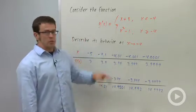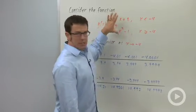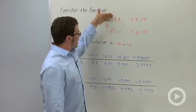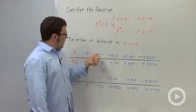Describe its behavior as x approaches negative 4. Well, at negative 4, that's where the two pieces are kind of joined together, and so it may behave differently depending on what side of negative 4 we're on. So let's try approaching negative 4 from the left.